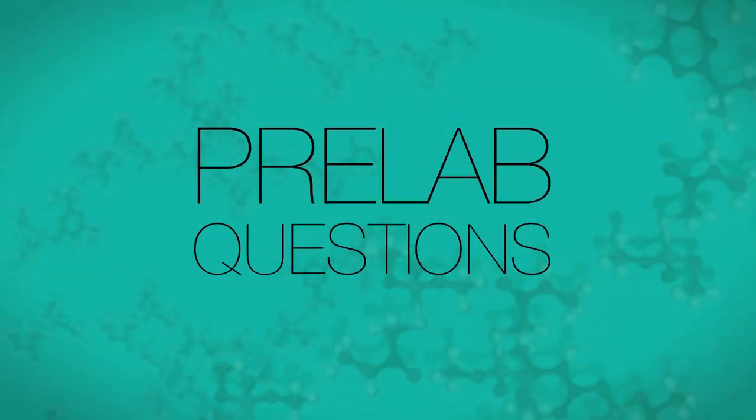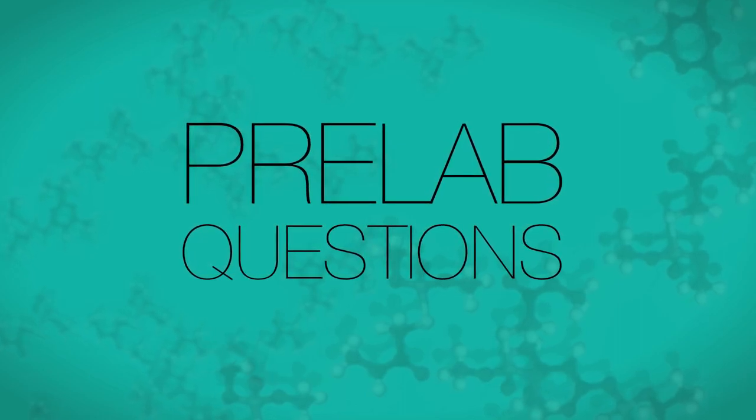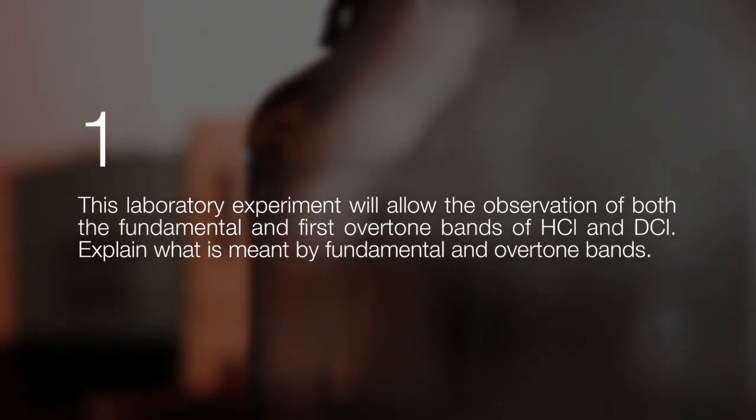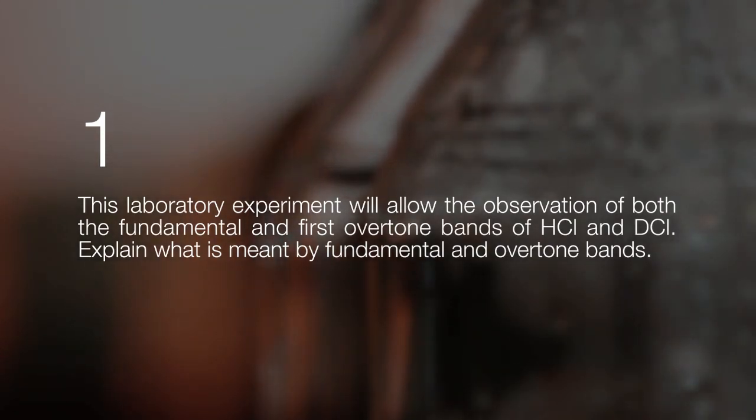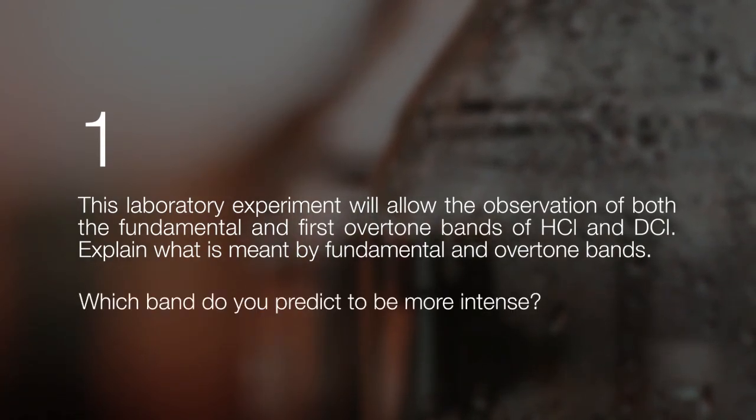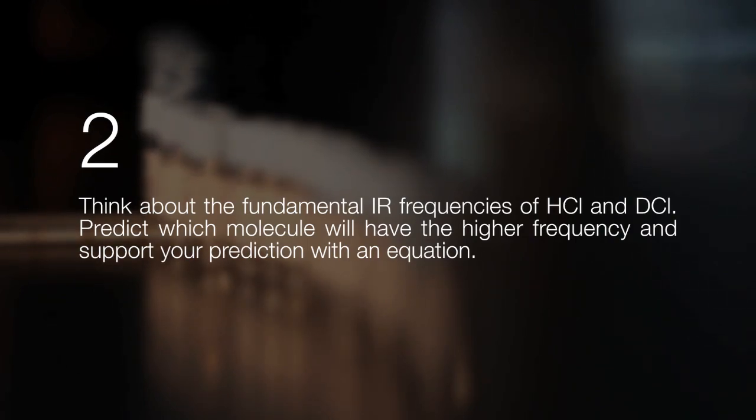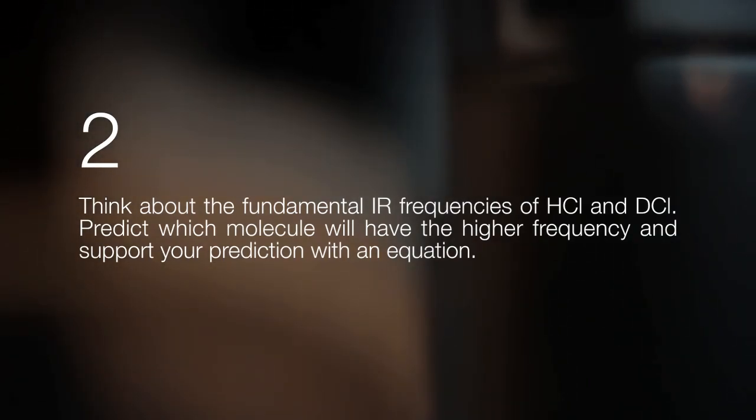Now, before you come into the lab to perform your experiment, take a minute to answer the following questions as part of your pre-lab. These questions can also be found in your experimental handout. This laboratory experiment will allow the observation of both the fundamental and first overtone bands of HCl and DCl. Explain what is meant by fundamental and overtone bands. Which band do you predict to be more intense? Think about the fundamental IR frequencies of HCl and DCl. Predict which molecule will have the higher frequency and support your prediction with an equation.